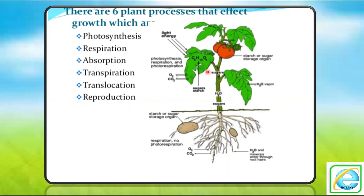The last process is reproduction — the production of new flowers and fruits with the help of pollination. The plant produces fruit, which is essential for the formation of new plantlets with the help of seeds. These are the six processes: photosynthesis, respiration, absorption, transpiration, translocation, and reproduction.